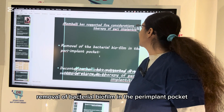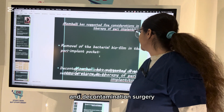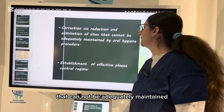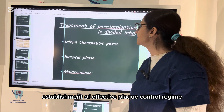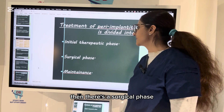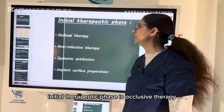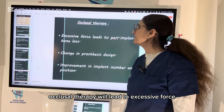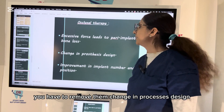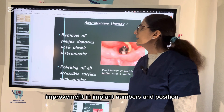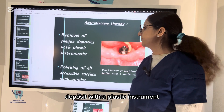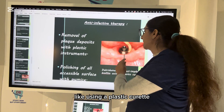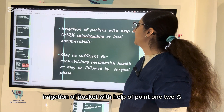There are five concentration therapy goals for peri-implantitis: removal of bacterial biofilm from the peri-implant pocket, decontamination surgery, decontamination of the implant surface, correction by reduction or elimination of sites that cannot be adequately maintained by oral hygiene, and establishment of effective plaque control. Treatment phases are: initial therapeutic phase, surgical phase, and maintenance phase. The initial therapeutic phase includes occlusal therapy — removing excessive forces that cause peri-implant bone and mucosa damage — along with changes in prosthesis design and improvement in implant numbers and position. Anti-infective therapy involves removal of plaque deposits with a plastic instrument and polishing of all accessible surfaces.